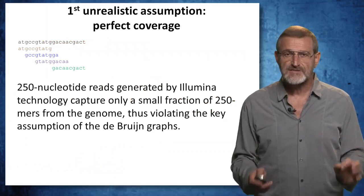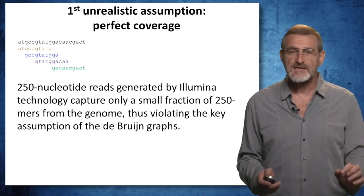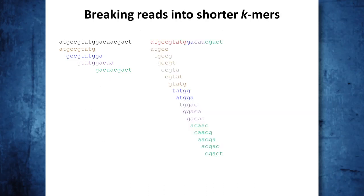Let's consider the first unrealistic assumption: that reads have perfect coverage, starting at every position of the genome. In reality, they start at some positions. For example, 250 nucleotide reads generated by Illumina capture only a small fraction of 250-mers from the genome, violating the key assumption of the de Bruijn graphs. What should we do? There is a simple solution: let's break reads into shorter k-mers. When we do this for four reads, the result is perfect coverage by shorter 5-mers. Thus, we can apply the de Bruijn graph idea to this set of reads broken into k-mers.